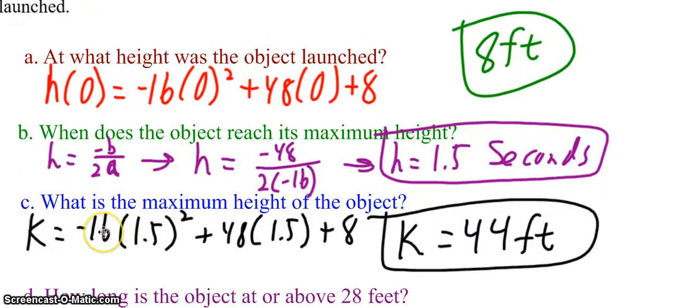Okay, so here, to find the k-coordinate, we plug the h-coordinate into the function. So k equals negative 16 times 1.5 squared plus 48 times 1.5 plus 8. k is 44 feet. So that is the maximum height of the object.